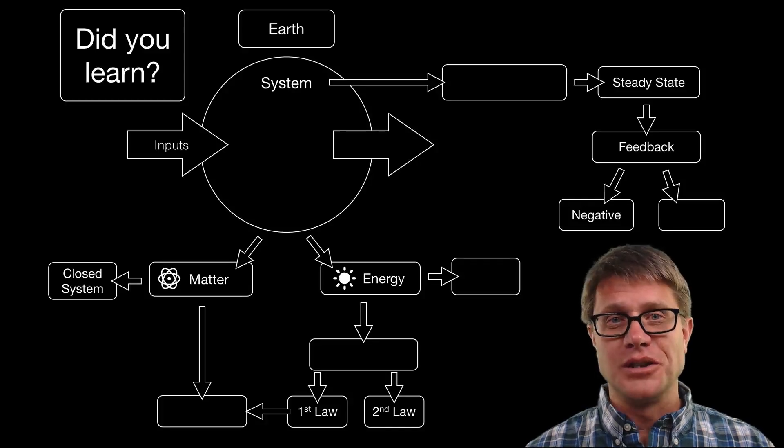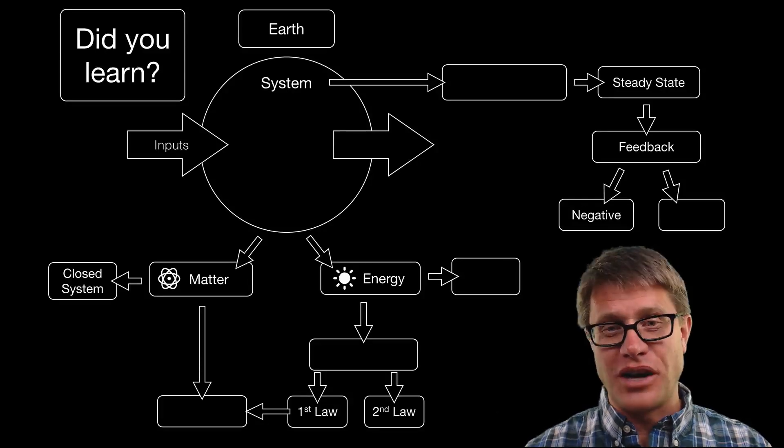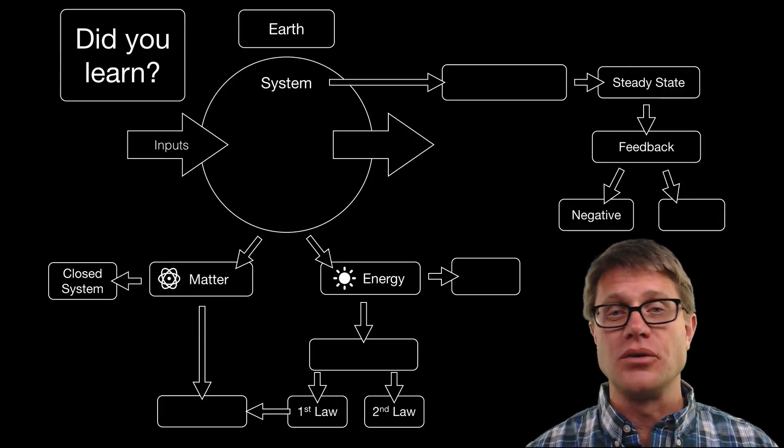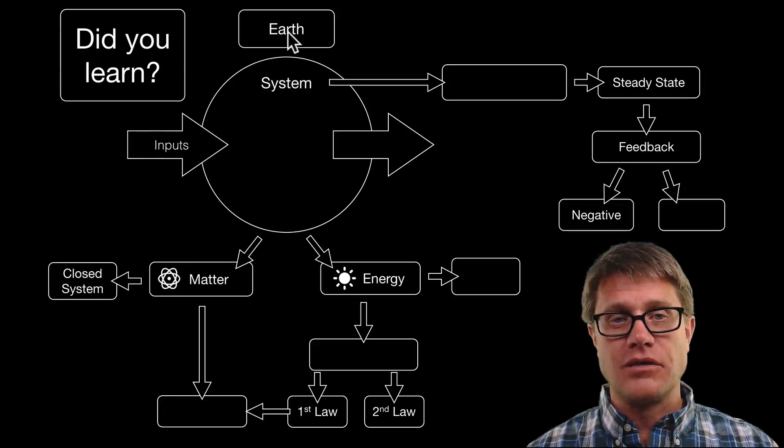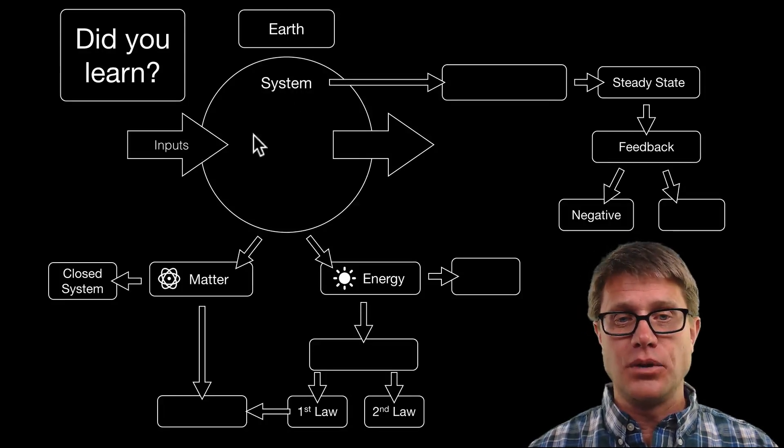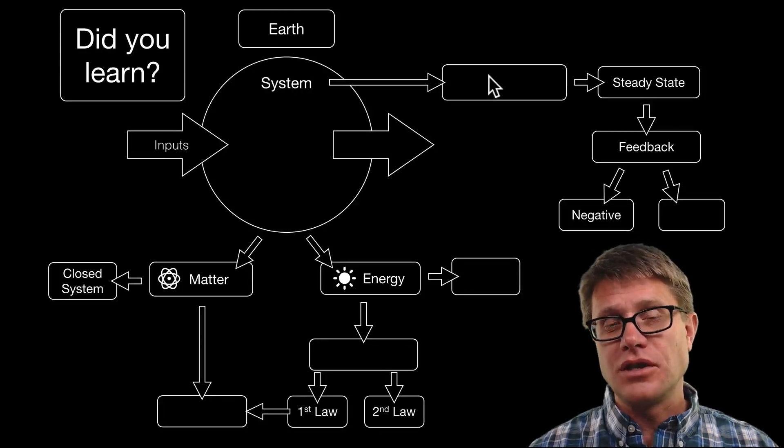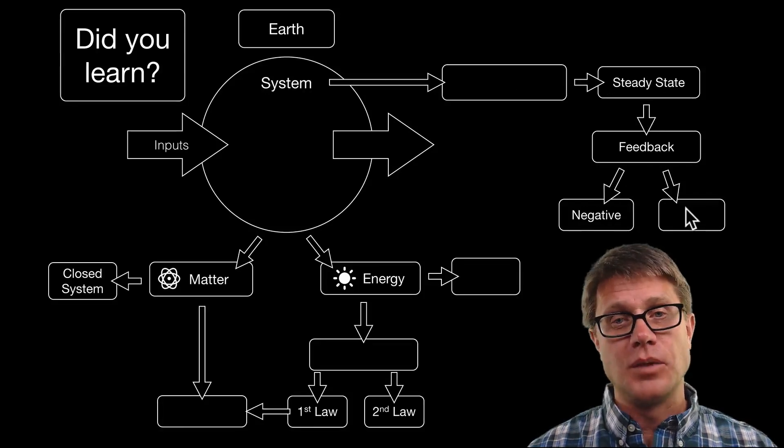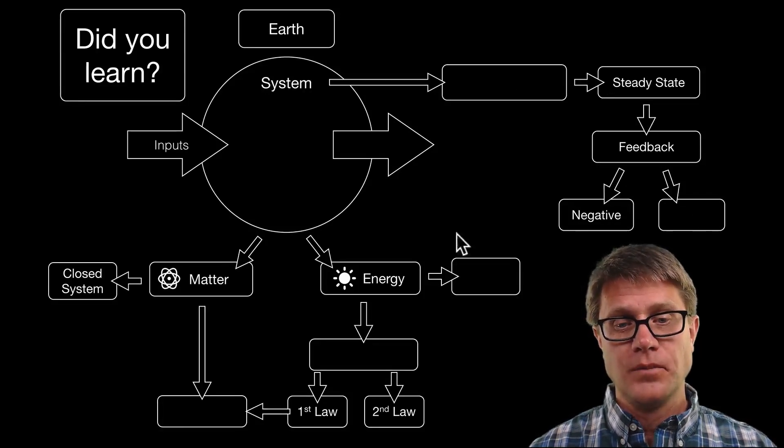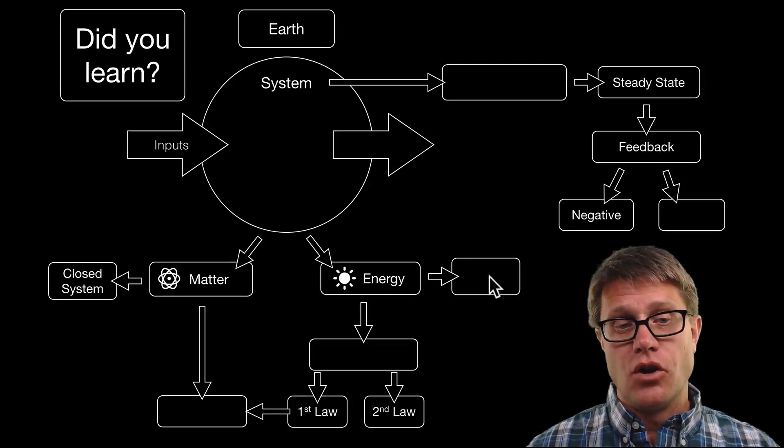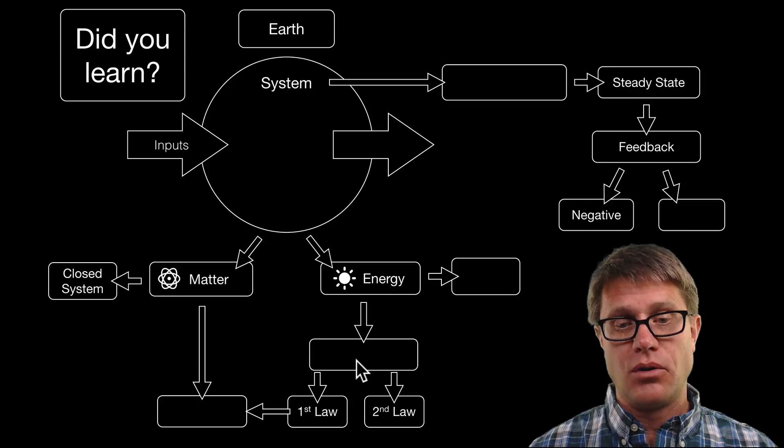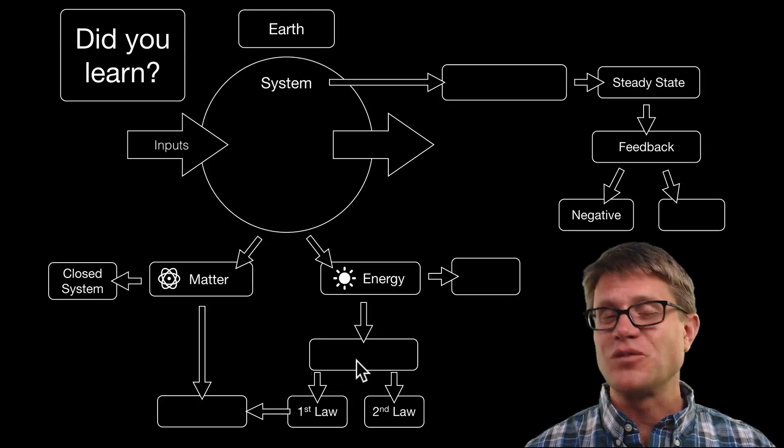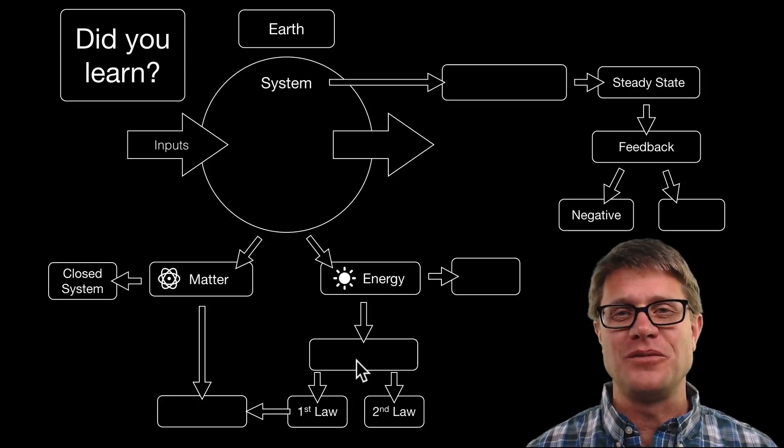So did you learn the following? I would pause the video right now and try to fill in the blanks. We can think of the earth as a system. It has inputs and outputs. We do systems analysis to measure that steady state. Remember it could be negative or positive feedback loop. Remember the energy is an open system versus a closed system of the matter. The matter is conserved. That whole study is called thermodynamics. Hopefully you learned that and I hope that was helpful.